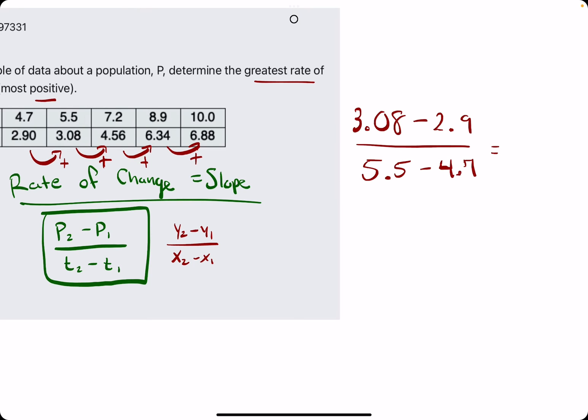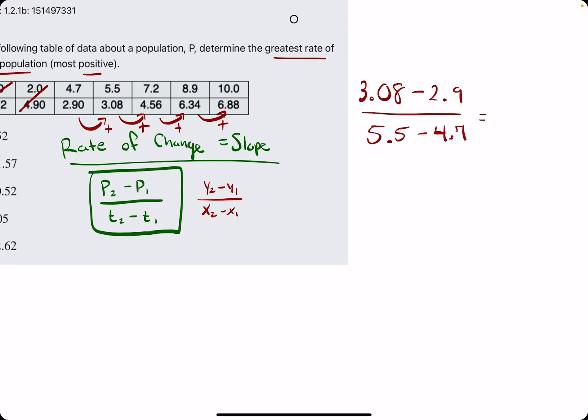Let's start at that one backwards, forgive me. We have 4.56 minus 3.08 all divided by 7.2 minus 5.5.